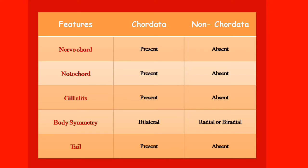Our first feature is Nerve Cord: in Chordates, nerve cord is present; in Non-Chordates, nerve cord is absent. Next is Notochord: in Chordates, present; in Non-Chordates, absent. Then Gill Slits: in Chordates, present; in Non-Chordates, absent. Next is Body Symmetry: Chordates have bilateral body symmetry; Non-Chordates have radial and biradial symmetry. Next feature is Tail: in Chordates, tail is present; in Non-Chordates, tail is absent. These are the features that differentiate Chordates and Non-Chordates.